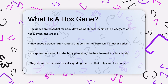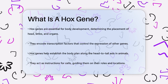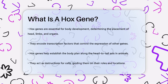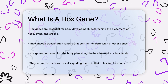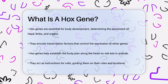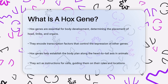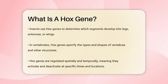Imagine your body as a complex blueprint, and HOX genes are the instructions that tell cells where they should be and what they should become. For example, in insects, HOX genes decide which segments will grow legs, antennae, or wings.